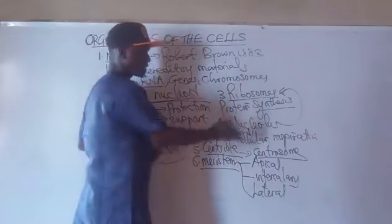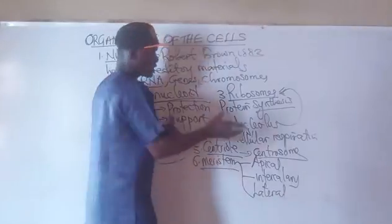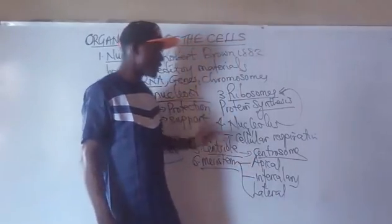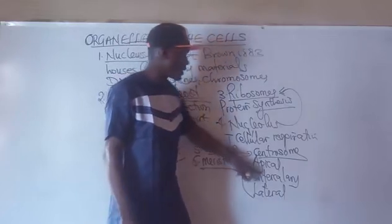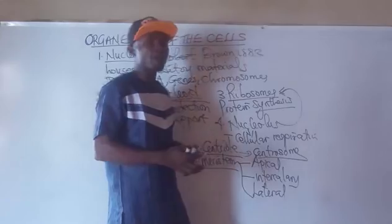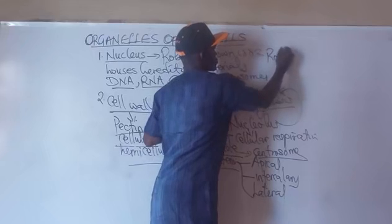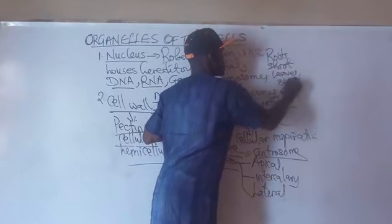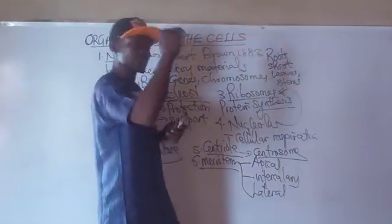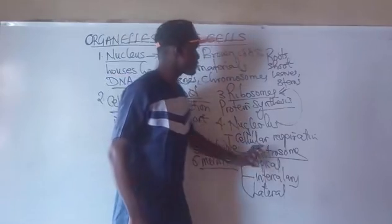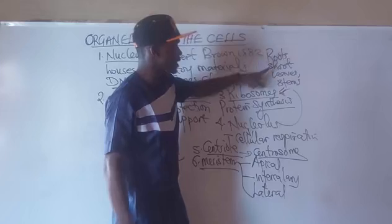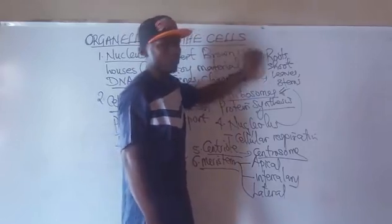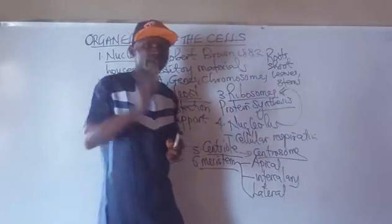The apical meristem — from the word 'apex' — is found in the tips of roots, shoots, leaves, and stems. Because they are found in the tips of these parts of plants, they are needed for the vertical growth of plants. So apical meristem brings about and triggers the vertical growth of roots, shoots, leaves, and stem.